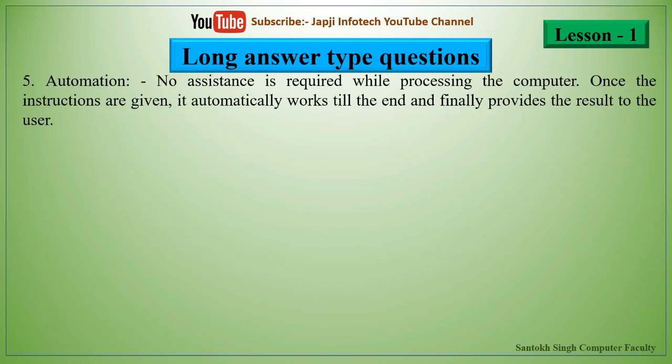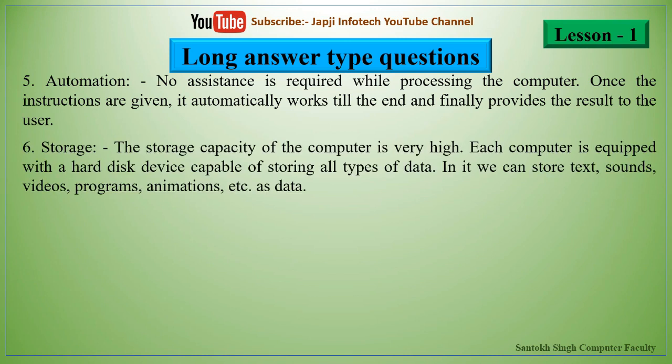The fifth characteristic is automation. No assistance is required while processing the computer. Once the instructions are given, it automatically works till the end and provides results to the user. The sixth one is storage. The storage capacity of the computer is very high. Each computer is equipped with a hard disk capable of storing all types of data. In it we can store text, sound, videos, programs, animation, etc. as data.